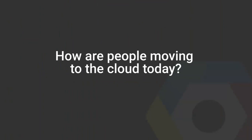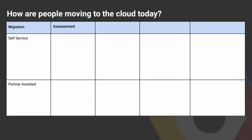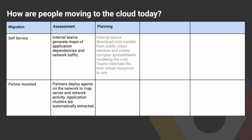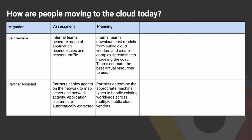There are two main modes in which one would move to the cloud: self-service and partner-assisted. In the assessment phase, self-service involves internal teams generating maps of application dependencies and network traffic. In partner-assisted, you deploy agents on the network to map server and network activity, automatically extracting application clusters. In the planning phase, self-service involves internal teams downloading cost models and creating spreadsheets. In partner-assisted, partners determine the appropriate machine types to handle existing workloads across multiple public cloud vendors, providing the best option.